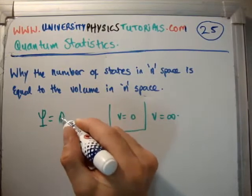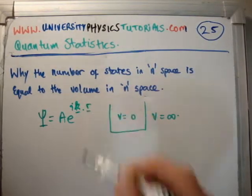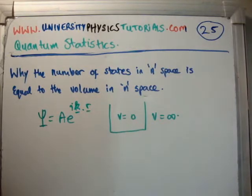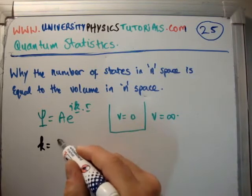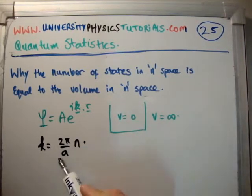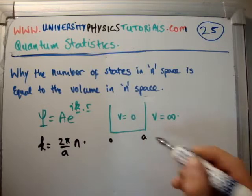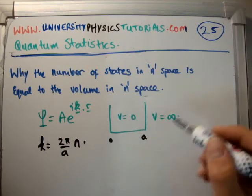And I did this and I found that the wave function is e to the i k dot r. But we found that the wave function cannot take any value that it likes. It is restricted by the fact that k must be equal to 2π over a times n, where a is the width of our well in one dimension or it could be in three dimensions as well. And n is an integer.